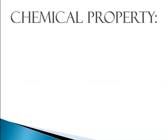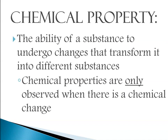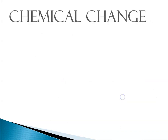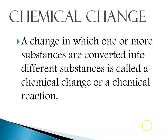This leads us to discussing what a chemical property is. A chemical property is the ability of a substance to undergo changes that transform it into different substances. Chemical properties are only observed when there is a chemical change taking place. A chemical change is one in which one or more substances are converted into different substances, and we call that a chemical change or a chemical reaction — those terms are interchangeable for our purposes.